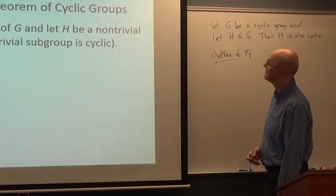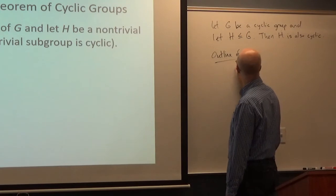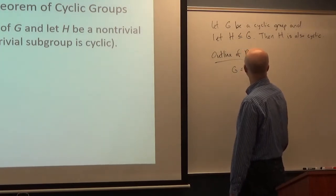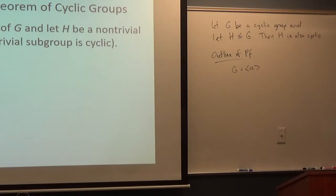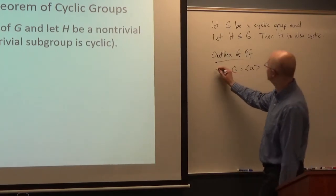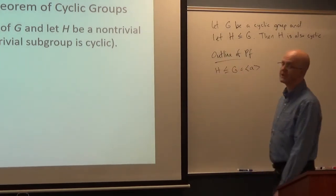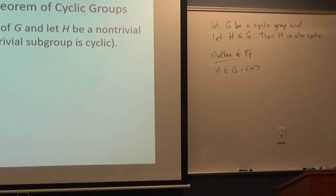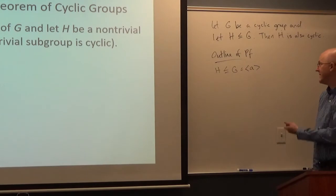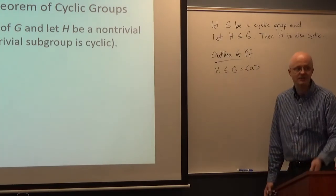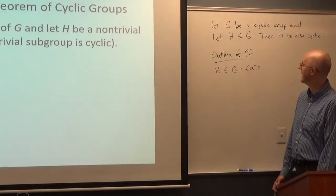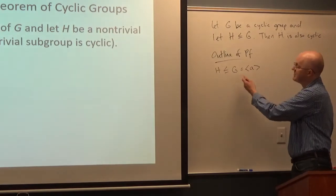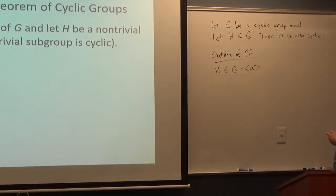The trivial subgroup containing just the identity is cyclic, so we don't have to worry about that. G is generated by A, and H is assumed to be a subgroup of G. We want to show H has some generator. If H equals G, then A would be its generator, but in general H might not equal G, so it should have some power of A as a generator.